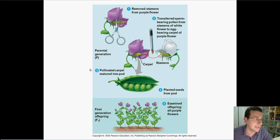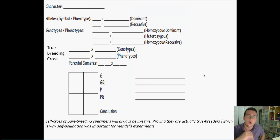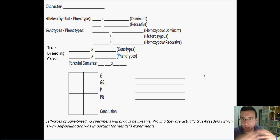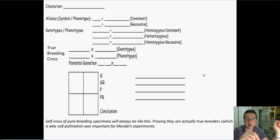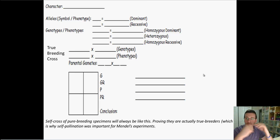That's where Mendel started his experiments — self-crossing flowers until he found ones that could only make more flowers like themselves, which we call a purebred cross. To understand how to do this correctly, you always list the character you're working on at the top, then the different alleles or gene versions for that character, and the traits those generate. Then list the possible combinations of alleles — the genotypes — and the possible phenotypes. Also list what you are crossing, then perform meiosis, segregate those alleles, set up the Punnett square, and solve it.